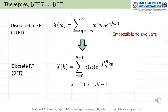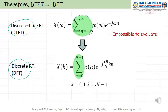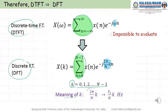Let me summarize. Discrete time Fourier transform is here, and discrete Fourier transform is here. From the DTFT, the infinite number of X of N can be changed to N numbers. Also, the continuous omega becomes discrete. K goes from 0, 1, 2, 3, up to N minus 1. The meaning of k is 2π/N × k, which corresponds to F-s/N × k in Hz — so 2π corresponds to F-s.